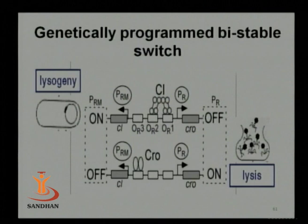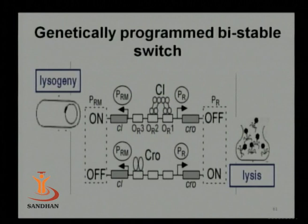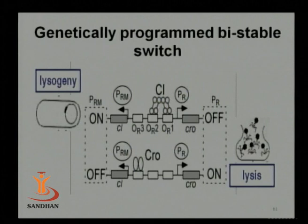This whole story is summarized as a bistable switch consisting of CRO and C1. If CRO is off and C1 is on, this leads to lysogeny. If CRO is on and C1 is off, this leads to lysis. This covers the complete story of the regulation of lysogeny and lysis.